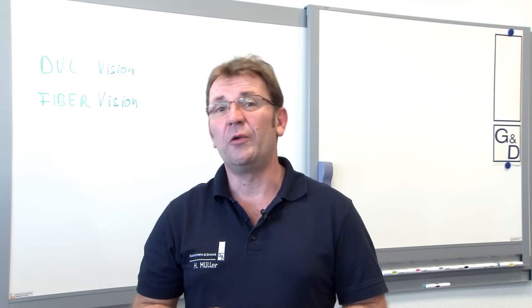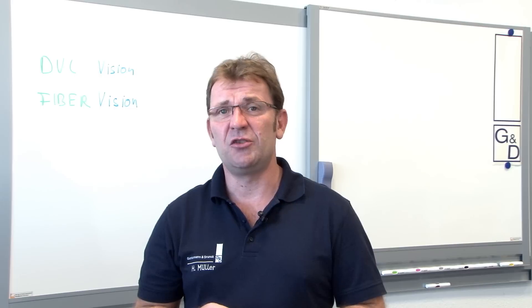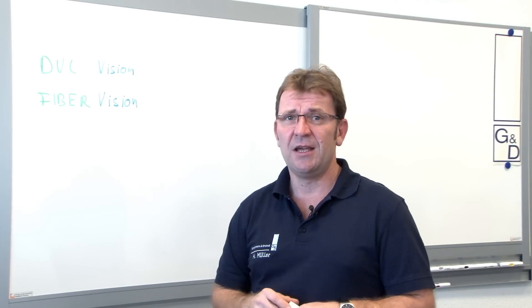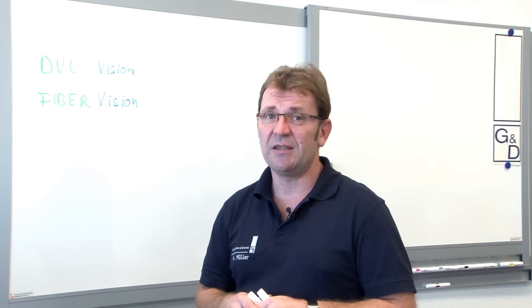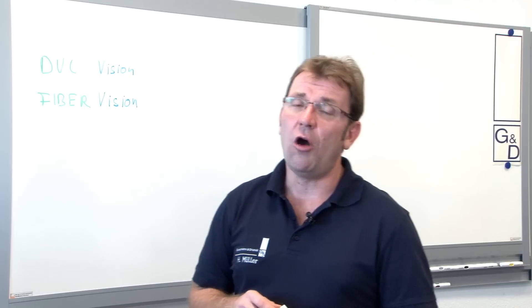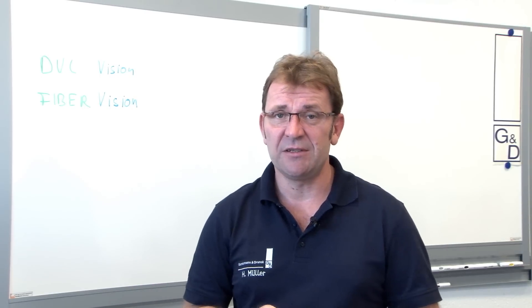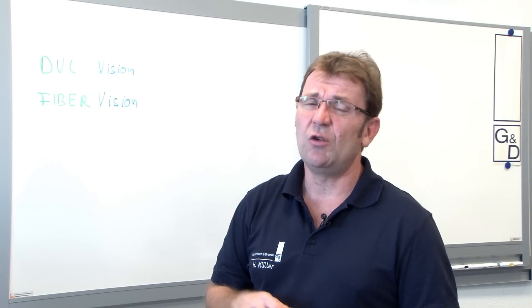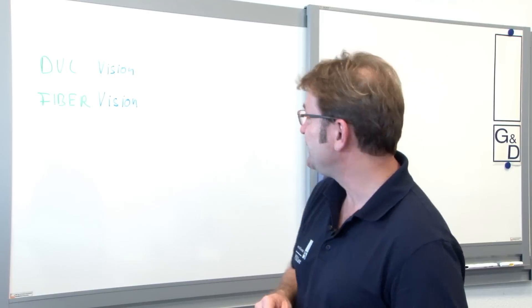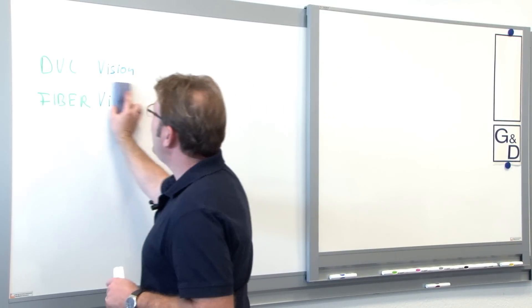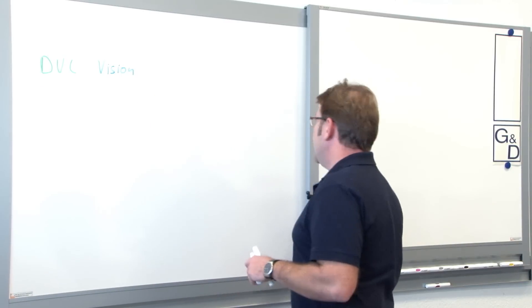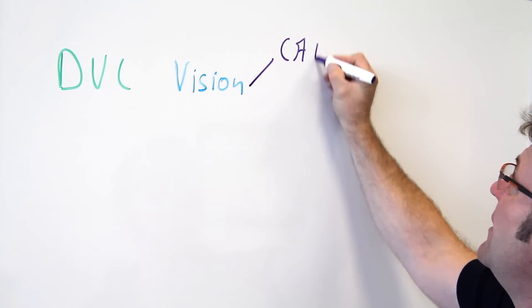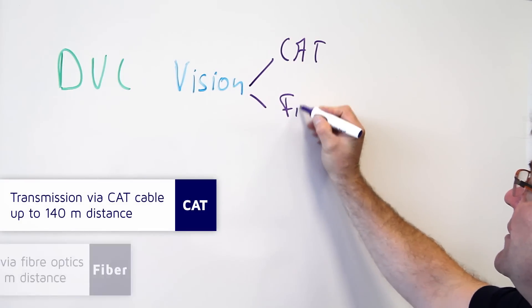As you might know, we had already two extender systems which do a similar job the new one does now. We have the DVI Vision, as we have it here on the board, and the Fiber Vision. DVI Vision delivered a DVI single link and some more computer signals over a CAT cable up to 140 meters, and the Fiber Vision did the same job but used fiber strands. To make it clearer and easier, we have now only DVI Vision — DVI Vision CAT and DVI Vision Fiber.